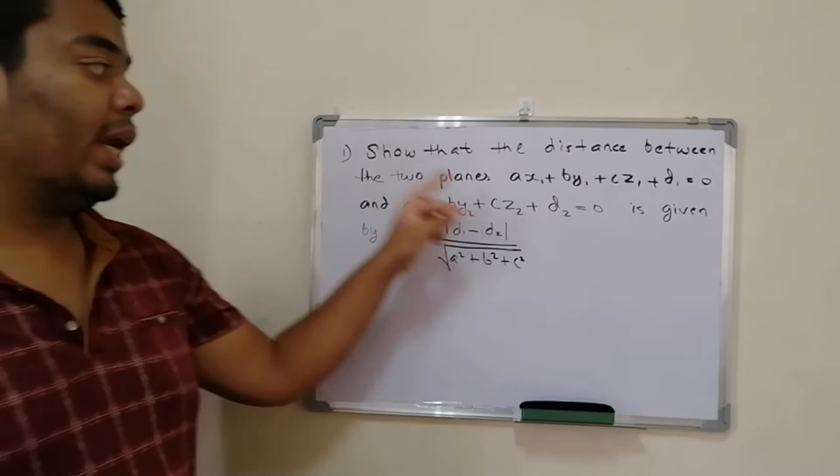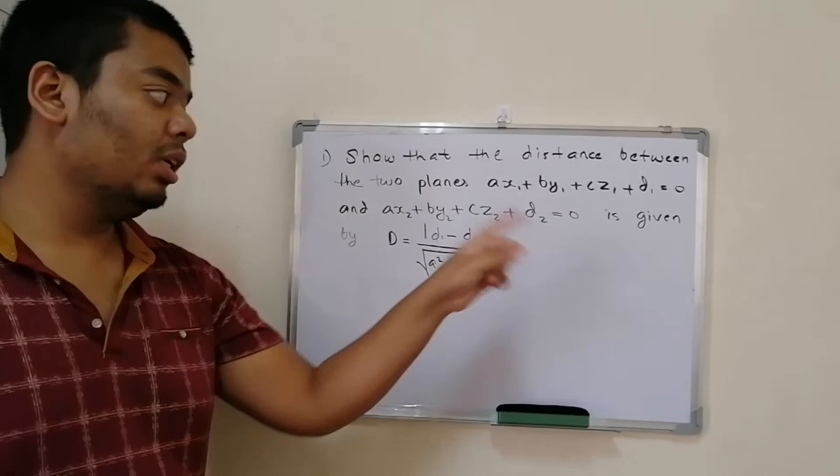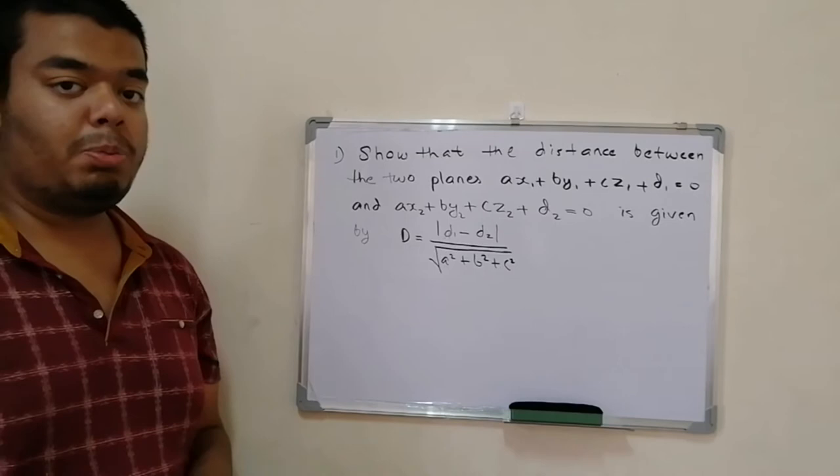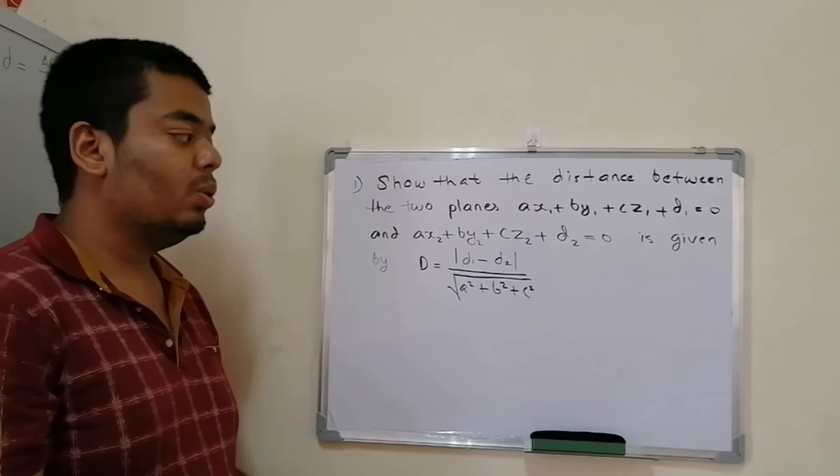Why are they parallel? Because if you notice, their perpendicular vector is given by (A, B, C), and the second plane has the same perpendicular vector (A, B, C). This tells us something special: both planes have the same perpendicular vectors, so they're parallel. Remember, if two planes have the same perpendicular vector, or their perpendicular vectors are proportional to each other, then the two planes are parallel to each other.